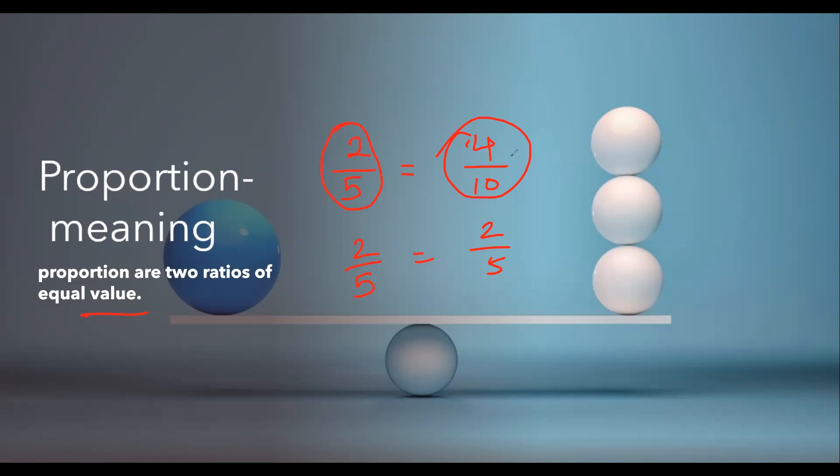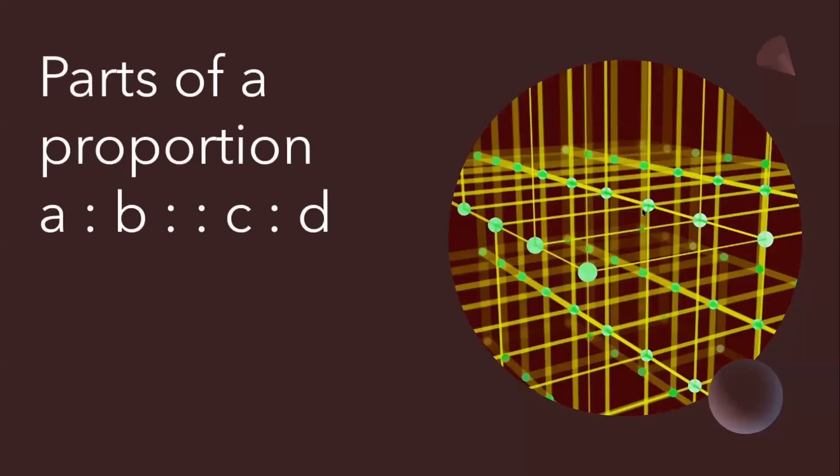So we can say that two by five and four by ten both are in proportion. So when two ratios are equal, we say they are in proportion. I hope you understand the concept of proportion.